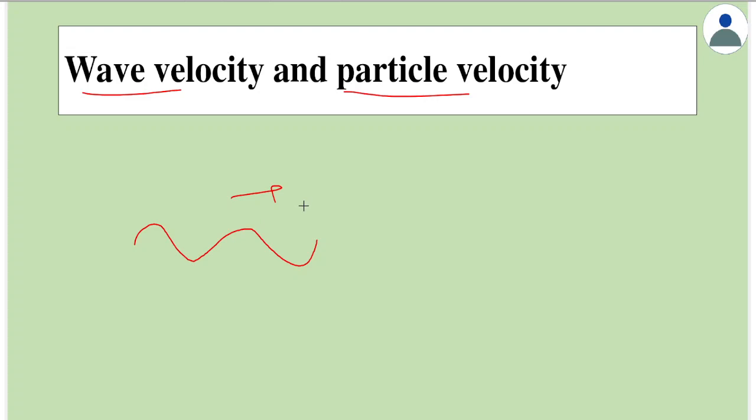We want to find out what is the particle's velocity as well as the wave velocity itself. Particle velocity means what is the velocity of any one particle. Keep in mind that here the particles undergo simple harmonic motion.